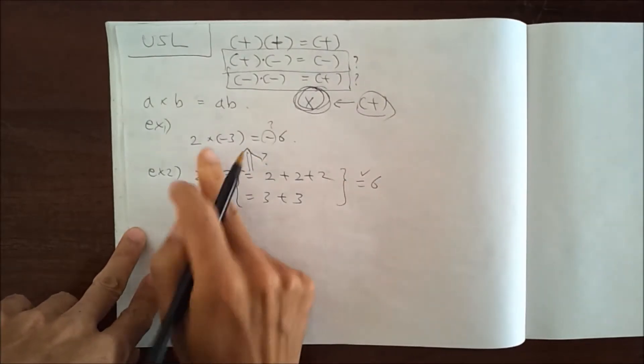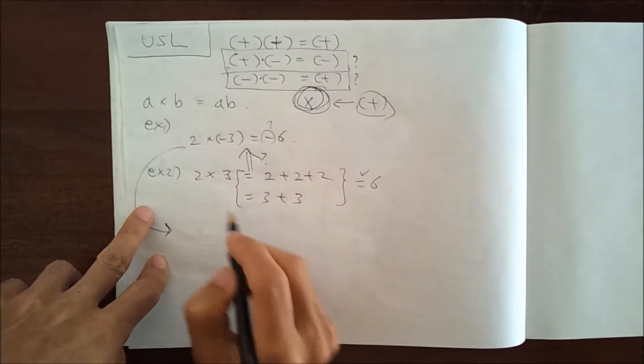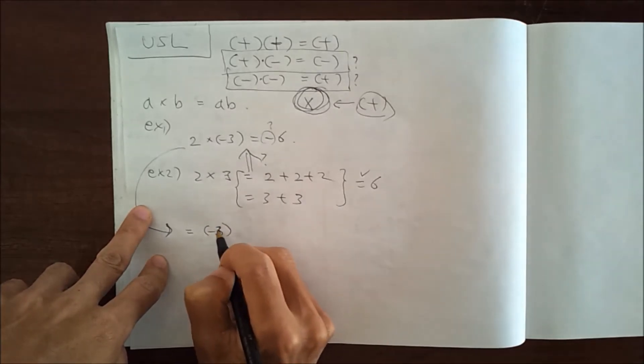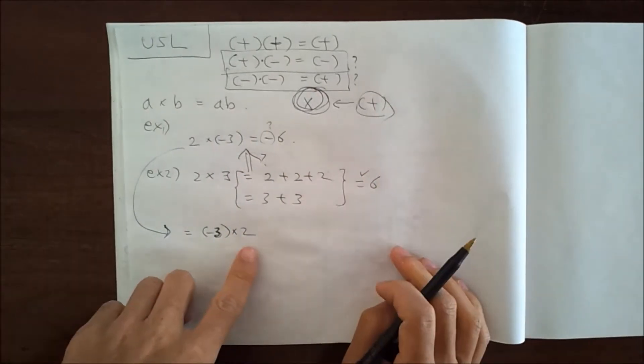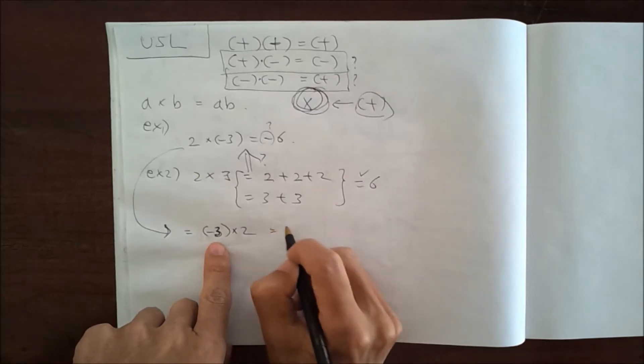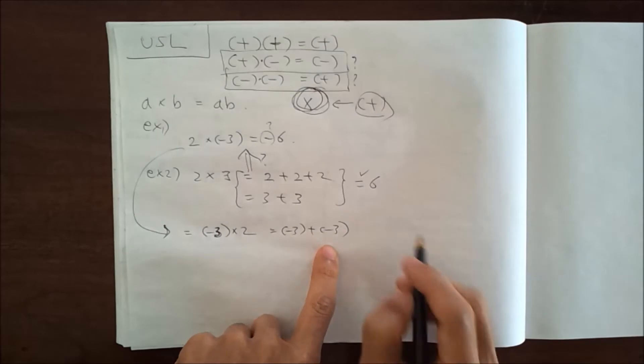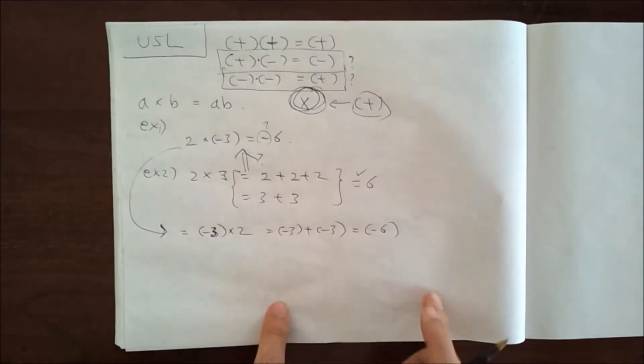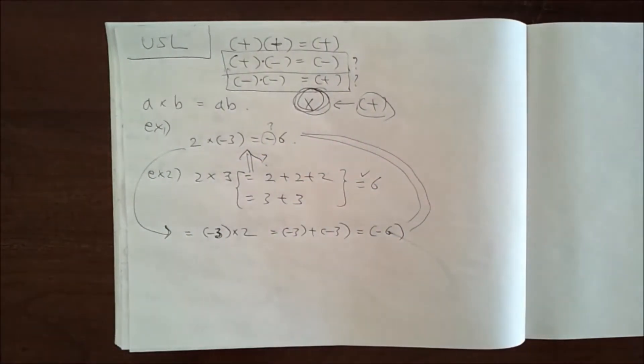Based on this, now let's attack this problem. 2 multiplied by minus 3 is the same as minus 3 multiplied by 2, because multiplication order doesn't matter. Minus 3 multiplied by 2 is minus 3 plus minus 3. Then, as you know already, minus 3 plus minus 3 is minus 6. Does it make sense?